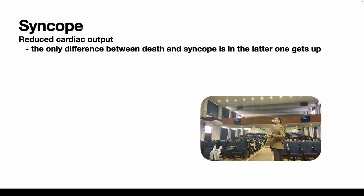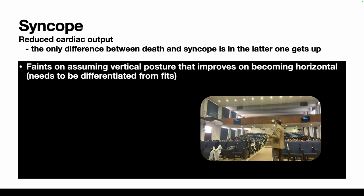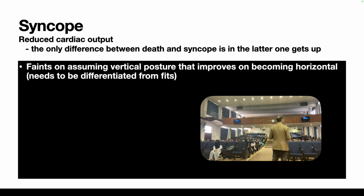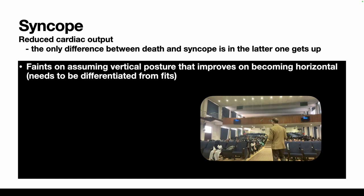Syncope: the only difference between death and syncope is that in syncope the patient gets up. It is a sudden diminution in cardiac output — when the patient is vertical they faint and black out, then become horizontal, blood flow to the brainstem is restored, and the patient becomes conscious. Syncope must be differentiated from fits: a fit is a cerebral dysrhythmia, while a faint is a cardiac problem — dysrhythmia, MI, pulmonary embolism, or insufficient circulating volume.